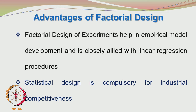What do we get out of a factorial design? We get an empirical model which gives the process response in terms of the different factors and their interactions, telling us which factors are important and which interactions are important. As cited from Montgomery's book, statistical design is compulsory for industrial competitiveness — a very important thing.